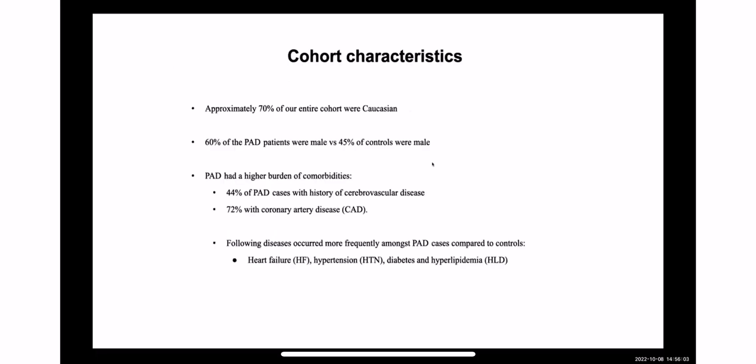Regarding cohort characteristics: approximately 70% of our cohort was Caucasian. 60% of PAD patients were male, and 40% of the controls — patients who did not have PAD — were male. We found that PAD patients had a higher burden of comorbidities: 44% had a history of cerebrovascular disease, 72% had coronary artery disease, and other frequent conditions included heart failure, hypertension, and diabetes.